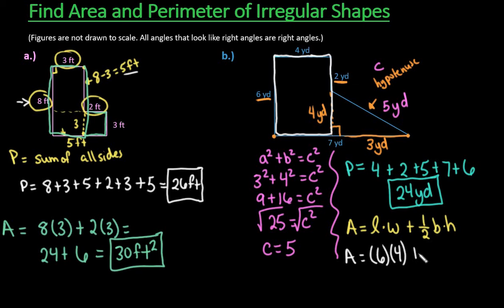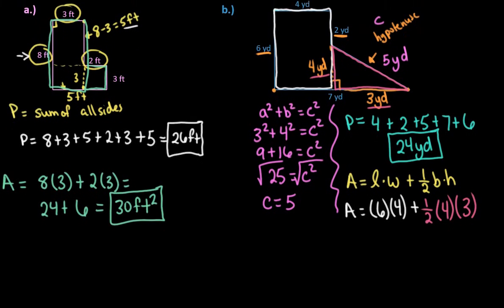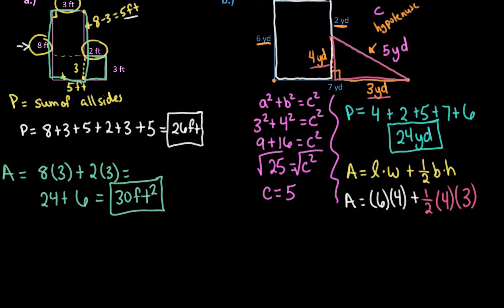So I would do six times four for that one, and then for our triangle, here's our triangle. Remember that when you have a right triangle, you do have to use the two legs. So I would do one-half of four times three. So we don't use the hypotenuse for the area, we just use it for the perimeter.